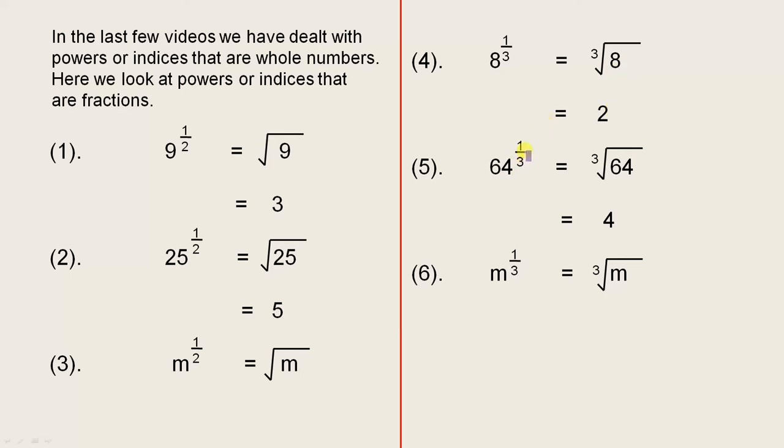64 to the power of 1 third is the cube root of 64. What number multiplied by itself 3 times gives you 64? And the answer is 4, because 4 times 4 times 4 is 64. So in general, meaning it doesn't matter what the base is, if it's raised to the power of 1 third, it means the cube root of the number.